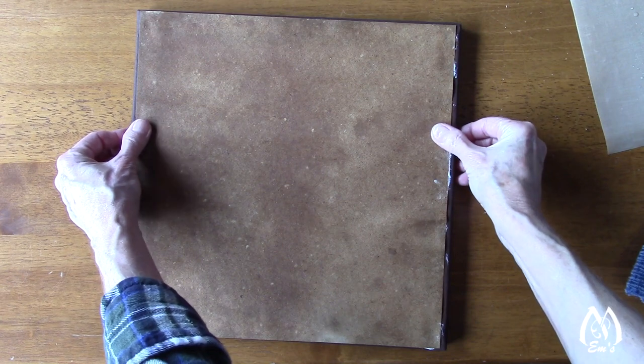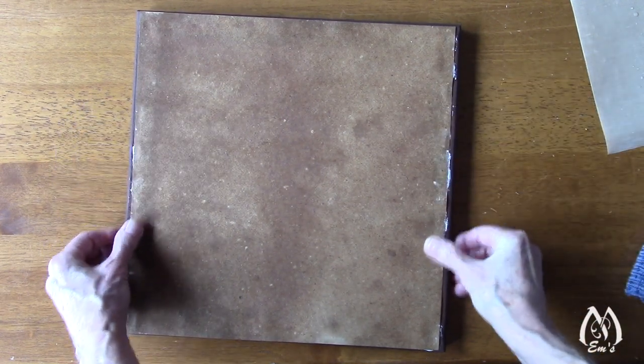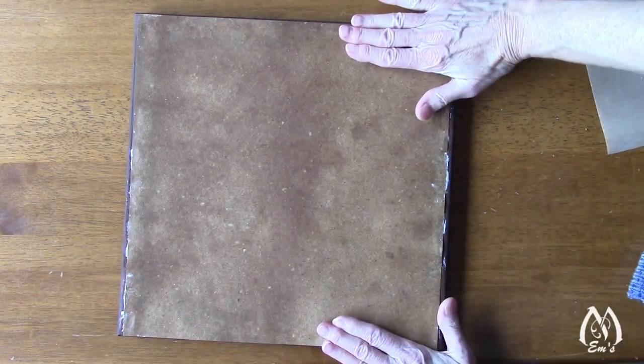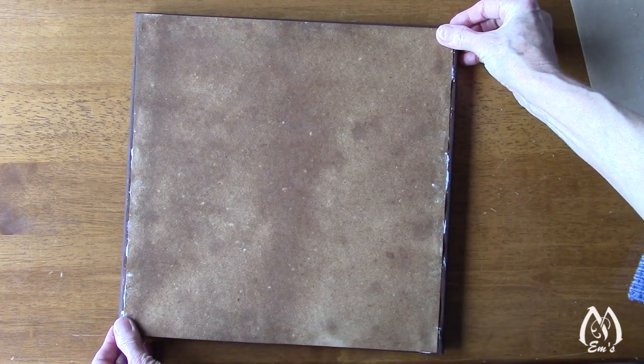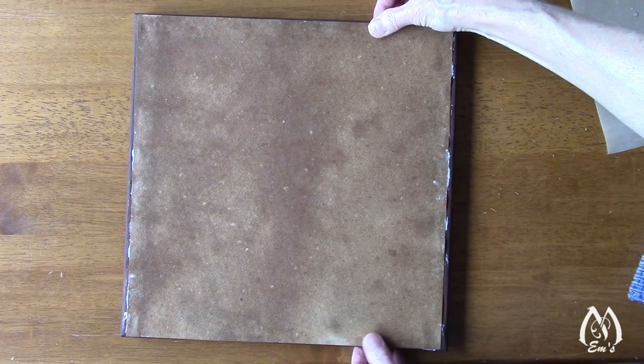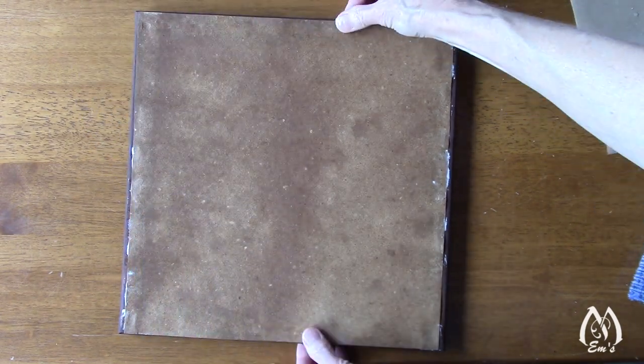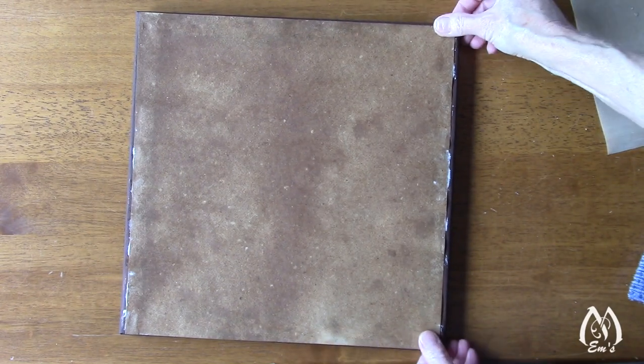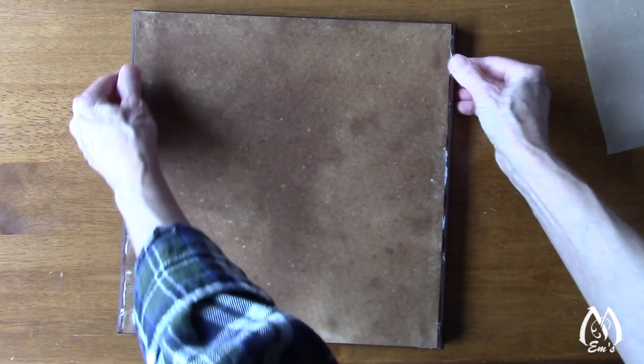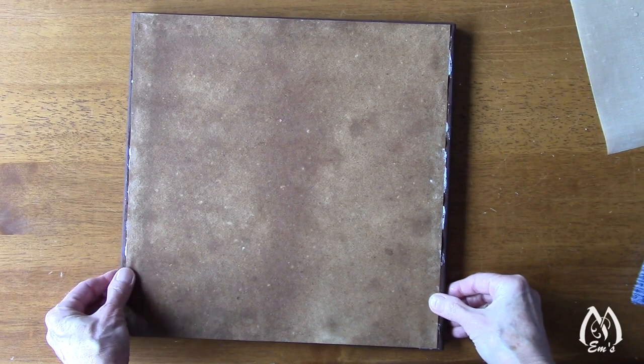For this 12 by 12 canvas, I cut this paper 11 and a half by 11 and a half, but I must have not been perfect because this side sure seems longer than that one. Pull out gently. I'm trying to see if you can see how it's getting taut.